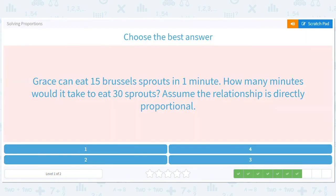Grace can eat 15 Brussels sprouts in one minute. How many minutes would it take to eat 30 Brussels sprouts? Again, let's just save time when we can. Two minutes. 15 times two is 30. One minute times two is two minutes.